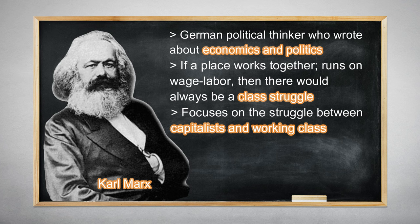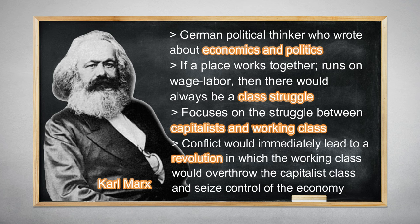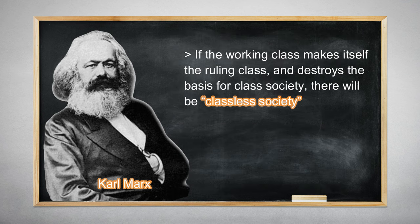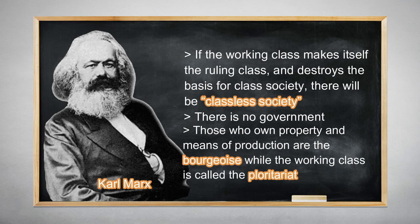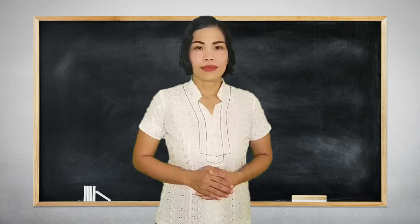Marxism is a political theory which focuses on the struggle between capitalists and the working class. He believed that this conflict would immediately lead to a revolution in which the working class would overthrow the capitalist class and seize control of the economy. Marxists believe that if the working class makes itself the ruling class and destroys the basis for class society, there will be a classless society. In Marxist society, there is no government anymore. In this theory, those who own property and means of production are the bourgeoisie, while the working class is called the proletariat.